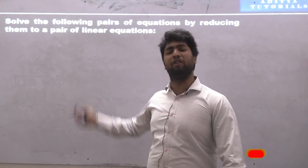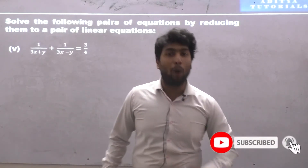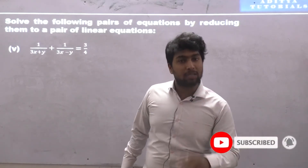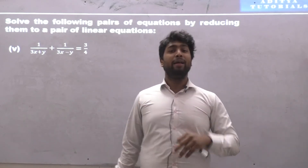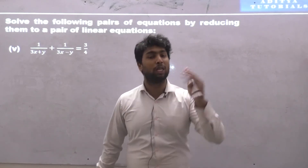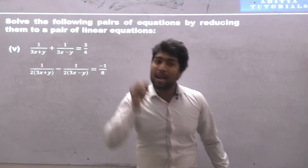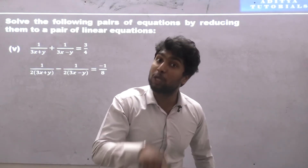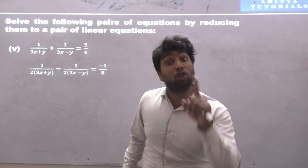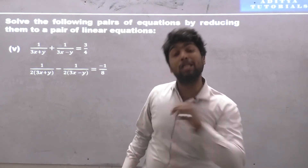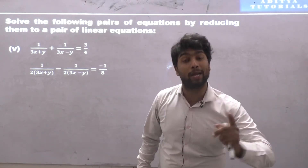The given equations are: the first equation is 1 upon (3x + y) plus 1 upon (3x − y) is equal to 3 upon 4. The second equation is 1 upon 2(3x + y) minus 1 upon 2(3x − y) is equal to minus 1 upon 8.